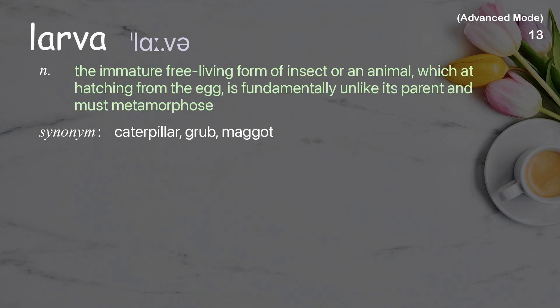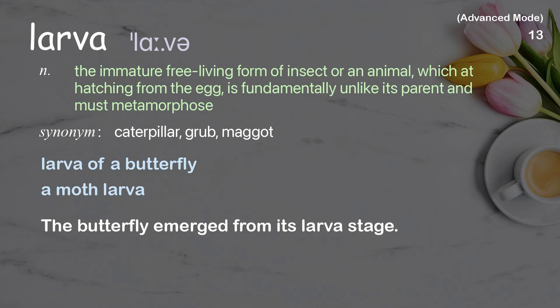Larva: the immature free-living form of an insect or animal, which after hatching from the egg is fundamentally unlike its parent and must metamorphose. Examples: larva of a butterfly, a moth larva. The butterfly emerged from its larva stage.